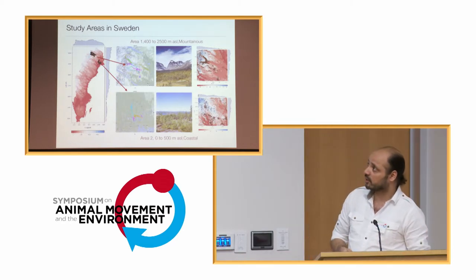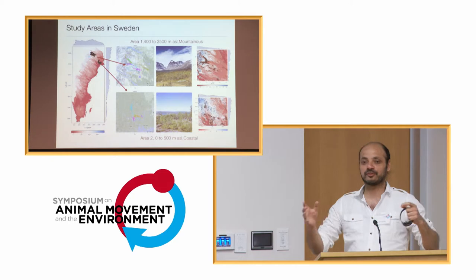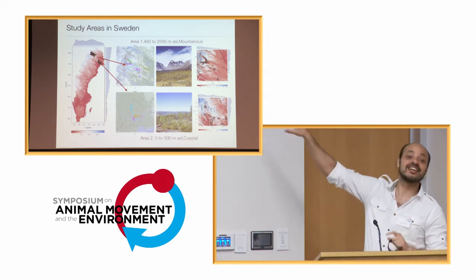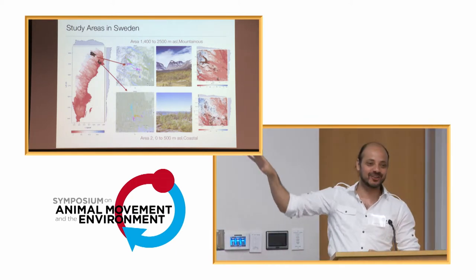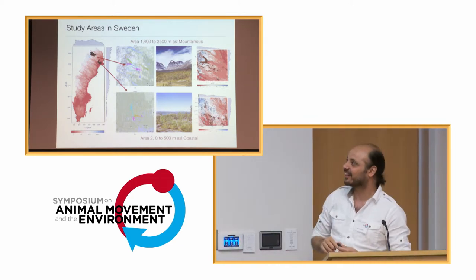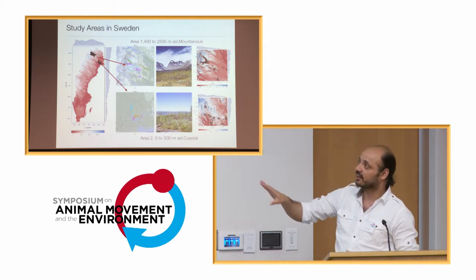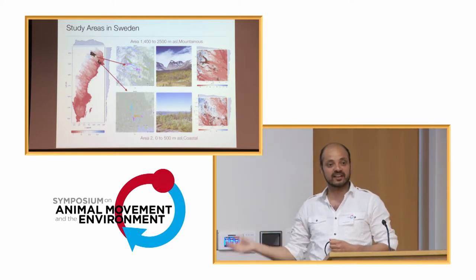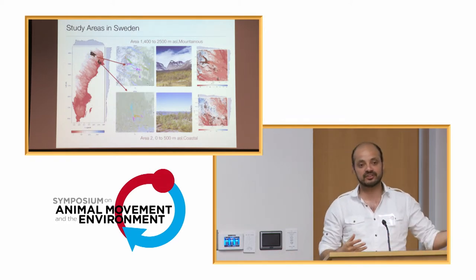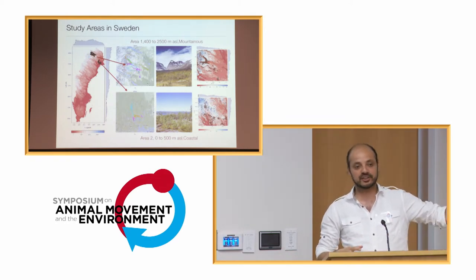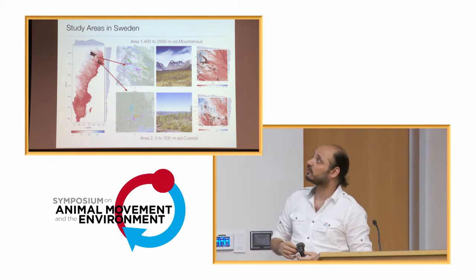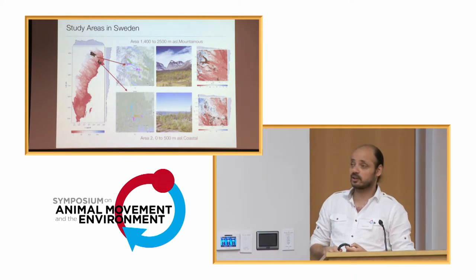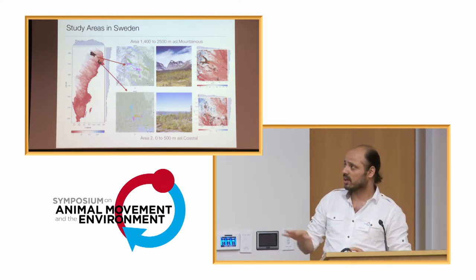These are the two study areas in Sweden — very far north. One area is very close to the mountains and the other is close to the coast, so we get a gradient of two different climates with 10 individuals marked in each area. The elevation in the first area ranges from around 1,400 to 2,500 meters, and the other from the coast to around 500 meters.